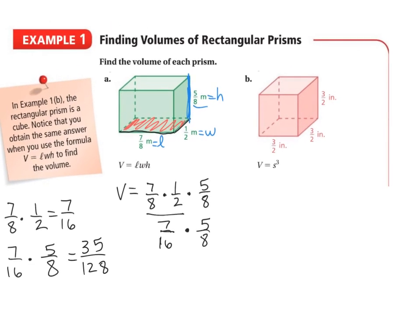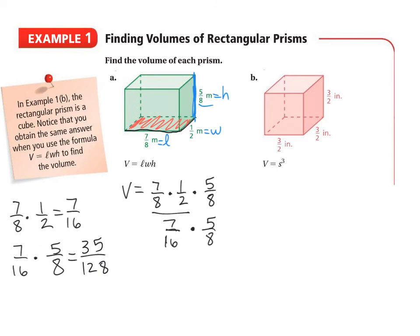So we just did this. So therefore, we have our volume now. Our volume is 35 over 128. And we have meters. And they are cubed now. I guess I should have put the square on the volume too.